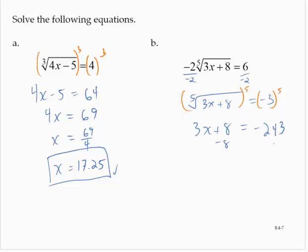Subtracting 8, 3x is negative 251. Dividing by 3, x is negative 251 thirds.